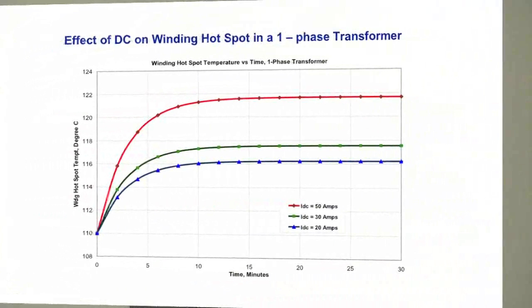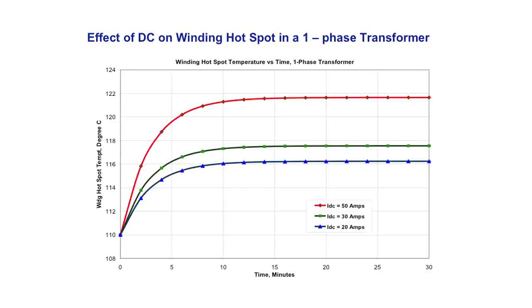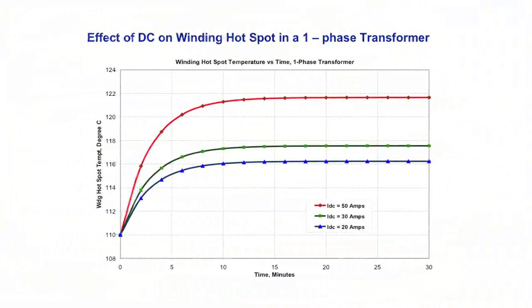Taking the case of 50 amps DC — the red curve — the temperature in the hot spot rises from 110 degrees upward, and within about 20 minutes it reaches 122 degrees: a rise of 12 degrees in about 20 minutes. Those 20 minutes represent about four times the thermal time constant. The time constant of this winding at that level is about five minutes, so within 20 minutes it reaches the steady-state level.